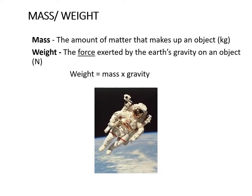With inertia proportional to mass, it's important to distinguish mass from weight. In everyday life we use these terms interchangeably, but weight is actually the force exerted by Earth's gravity on an object — measured in newtons using the formula: weight equals mass times gravity. Mass is the amount of matter making up an object, measured in kilograms. For example, an astronaut in space still has a mass of 75 kilograms, but their weight in newtons is zero due to weightlessness.